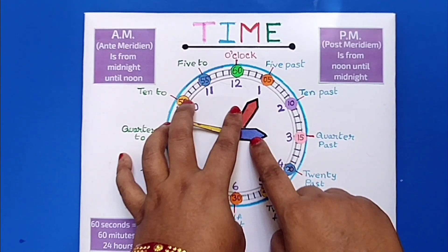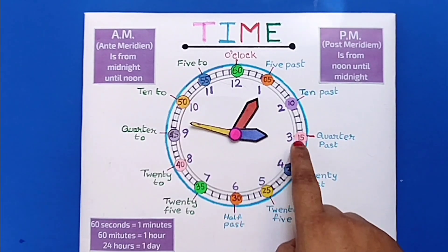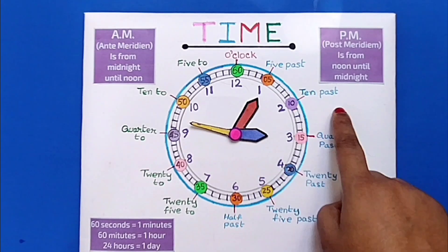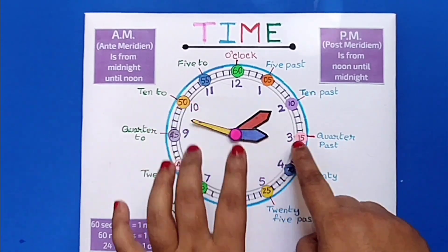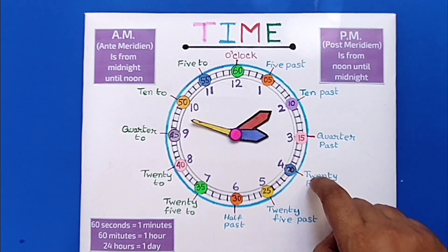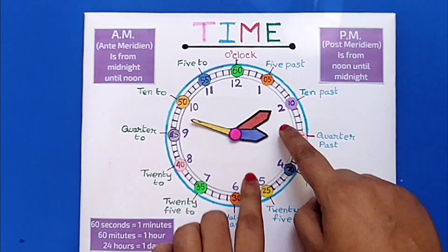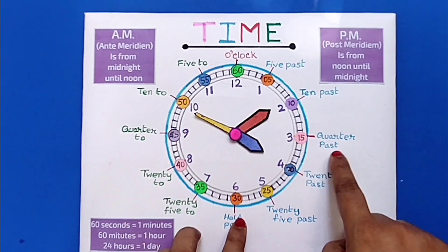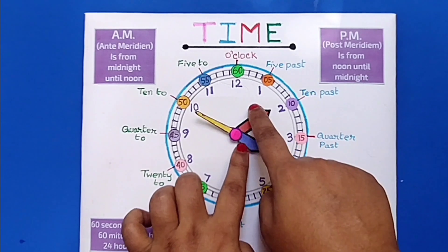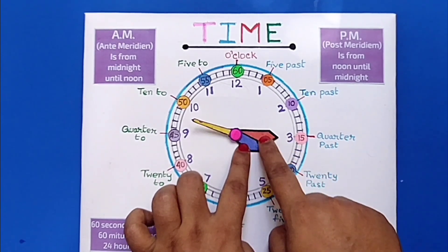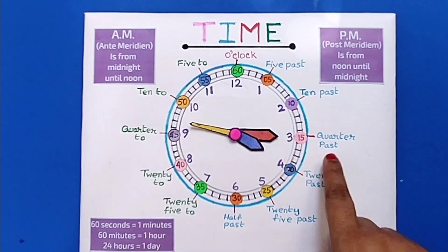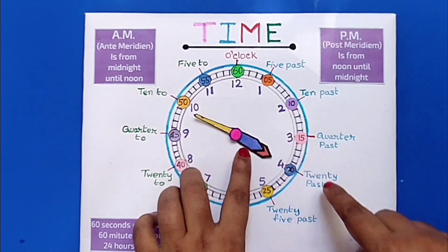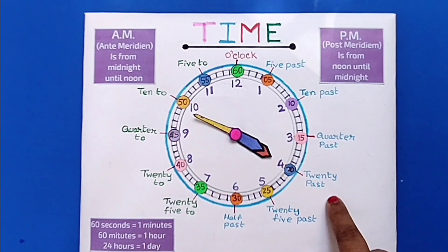Now the long hand is on 1 and the short hand is on 3, it is called 5 past 3. Now the minute hand is on 2 and the short hand is on 3, it is called 10 past 3. Now I move the short hand on 4 and the minute hand on 3, it is called quarter past 4. When both hands are on 4, we say it 20 past 4.